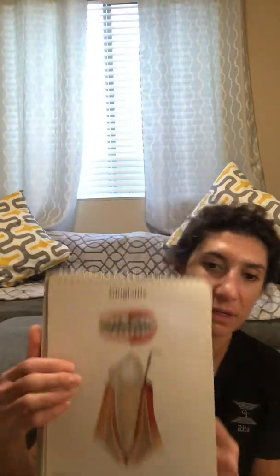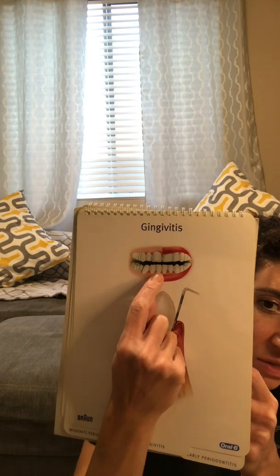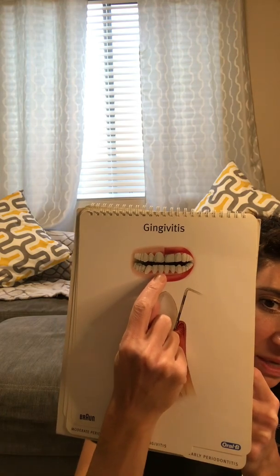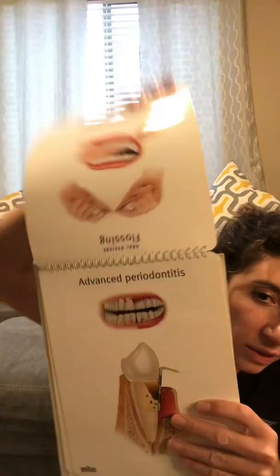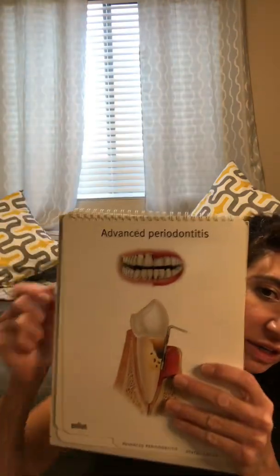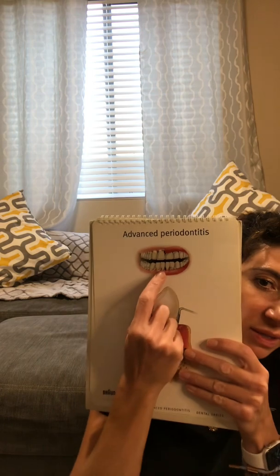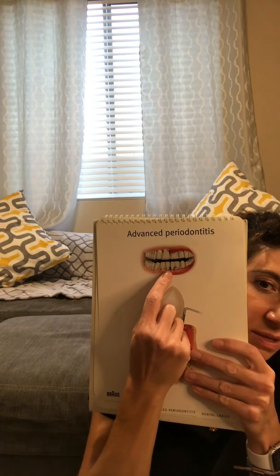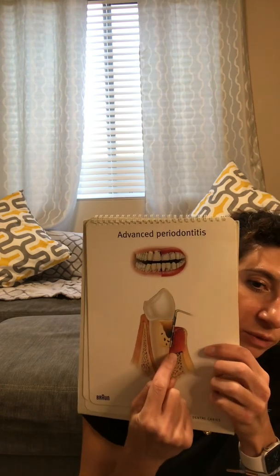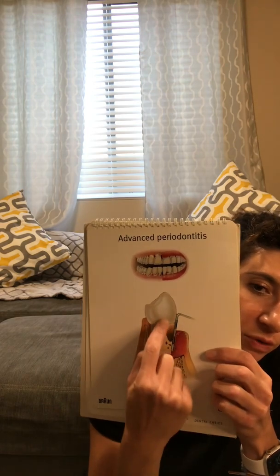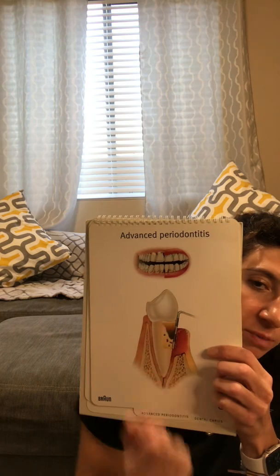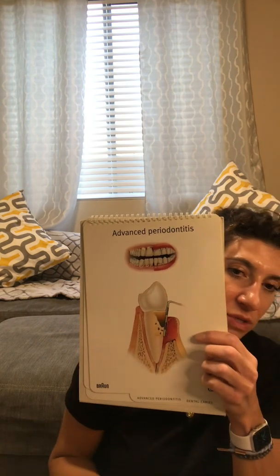If you go back to gingivitis, you see the space is filled in, whereas in advanced periodontitis the space is no longer filled in because you've lost bone. The gum tissue follows the bone — you've opened up the space between your teeth.